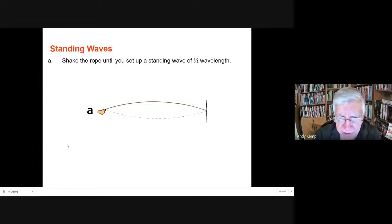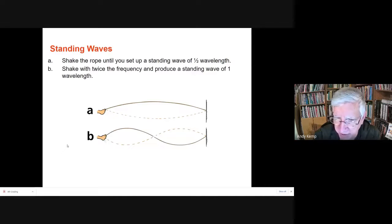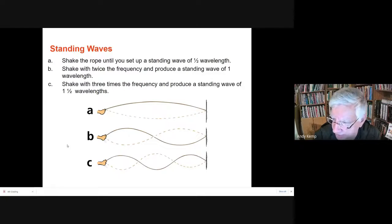So again, if you shook the rope at just the right speed, you could get half of a wavelength between you and the wall. That would be your fundamental frequency. And if you shake it twice as fast, you'll get two half wavelengths. Shake it three times as fast, you get three half wavelengths. And so forth.